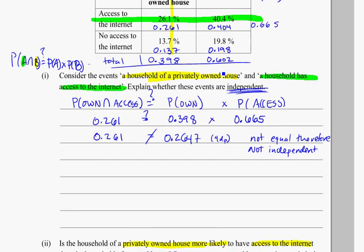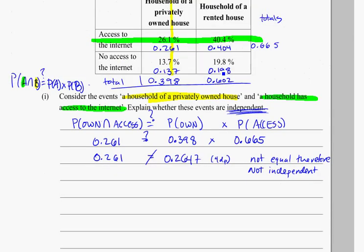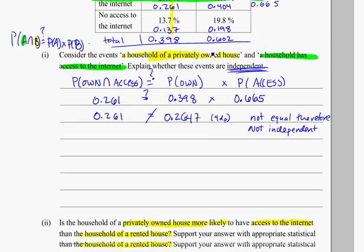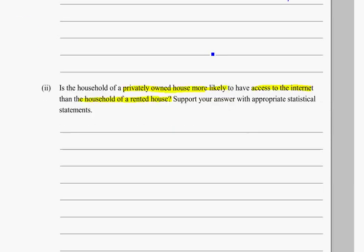You can kind of do this using intuition, just saying out of this group that own their house, what's the likelihood they have internet, and out of this group that they rent, what's the likelihood they have internet? But that's also just going to be a conditional probability statement as well. Or a given statement, if you remember. The probability of A given B is equal to the probability of A and B divided by the probability of B.